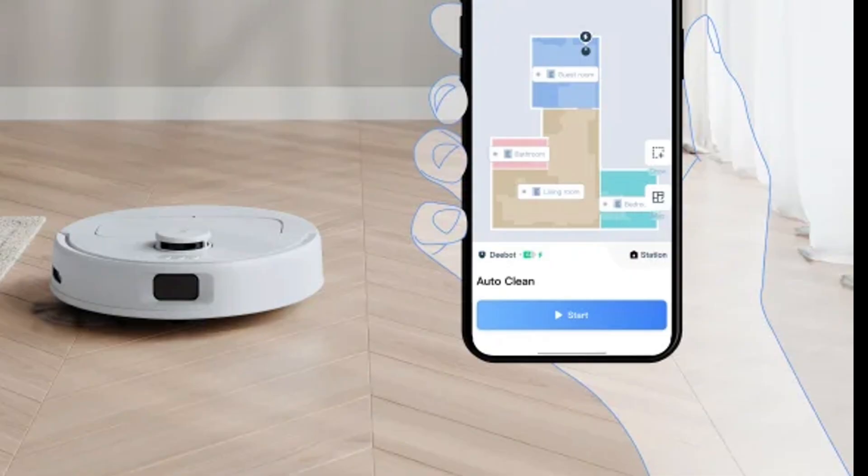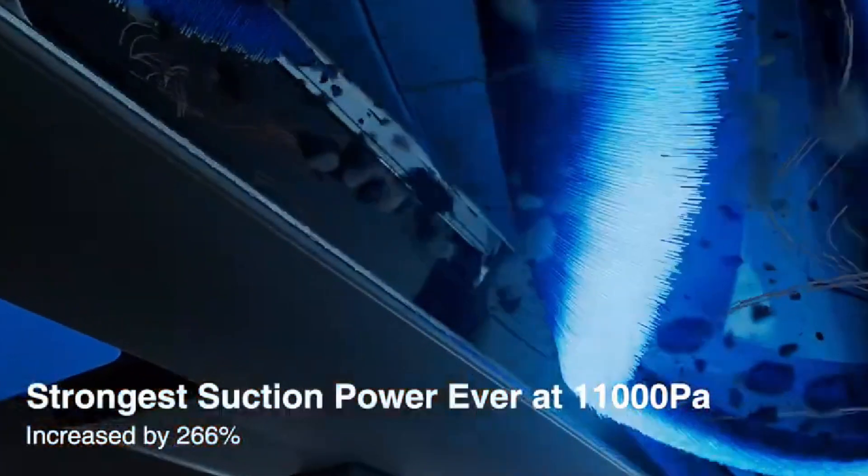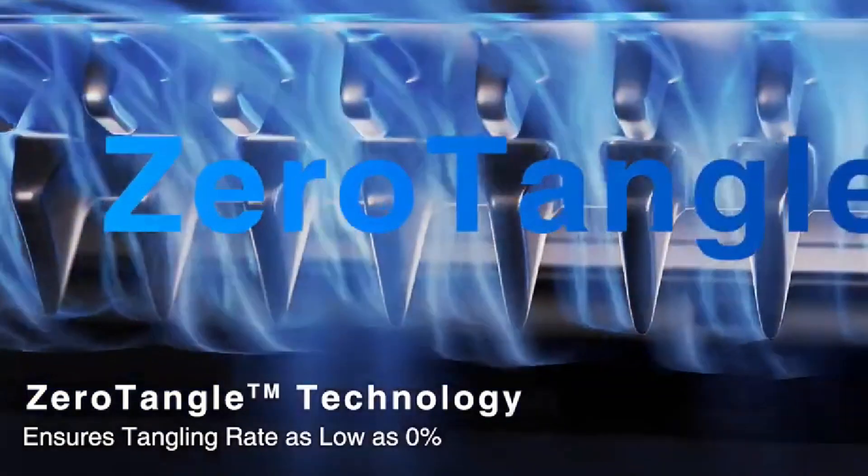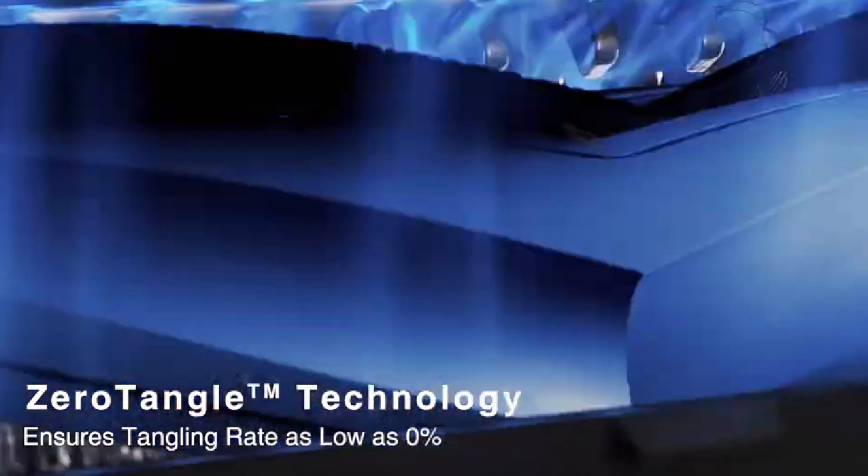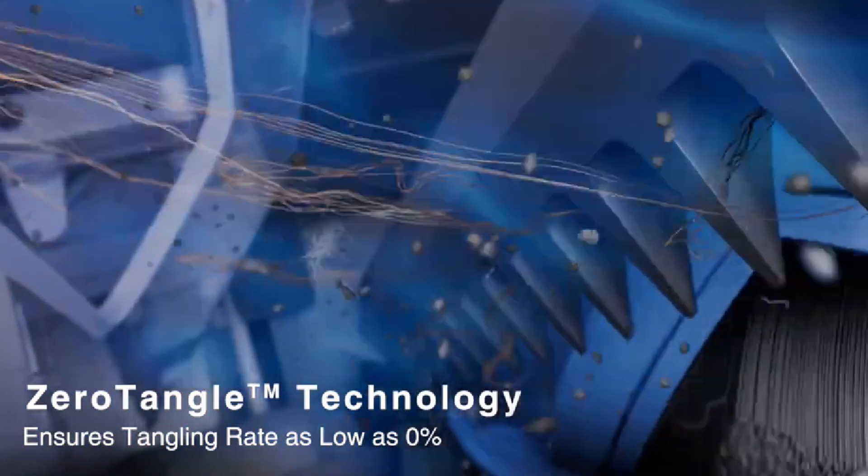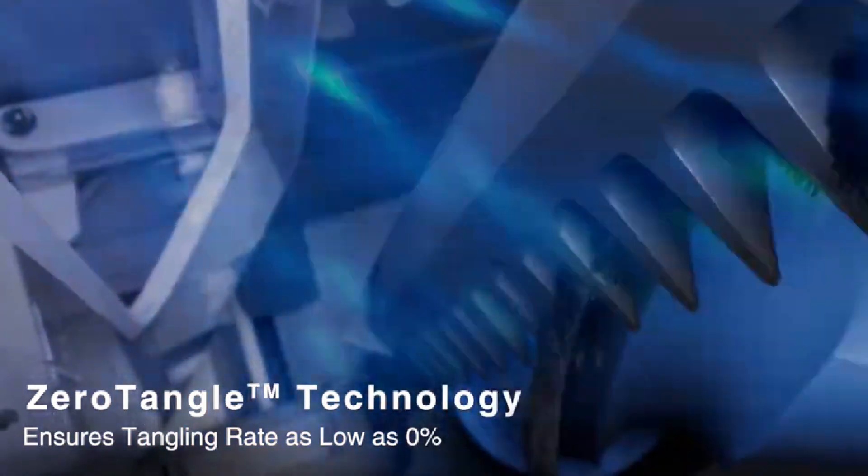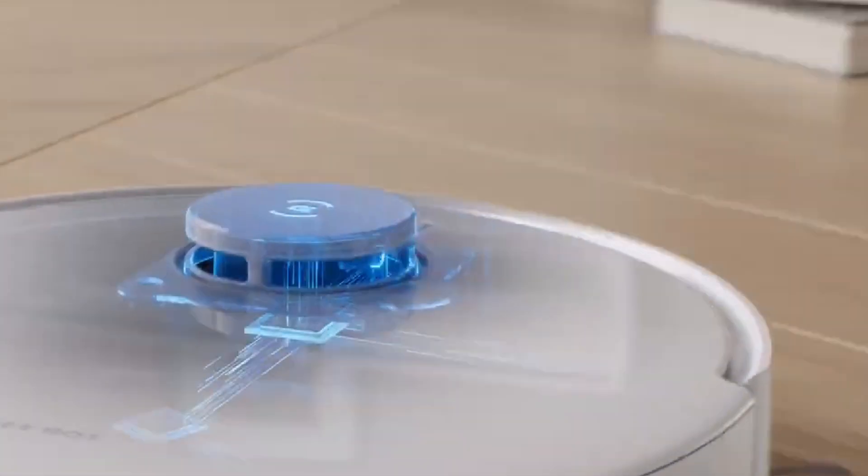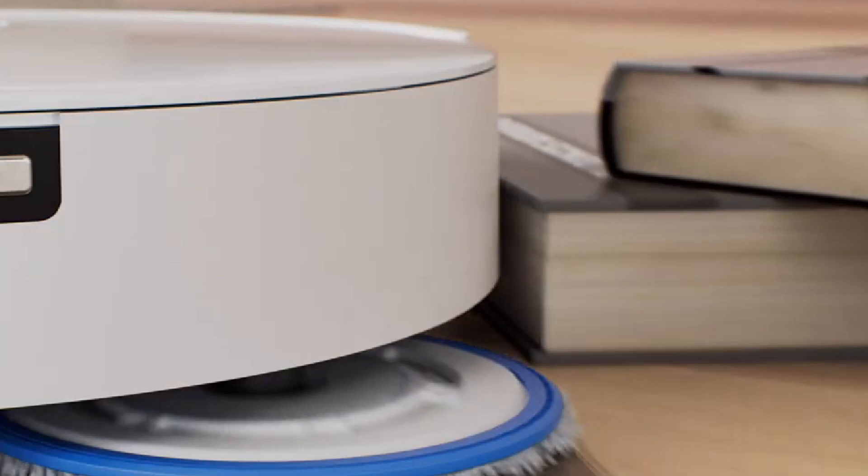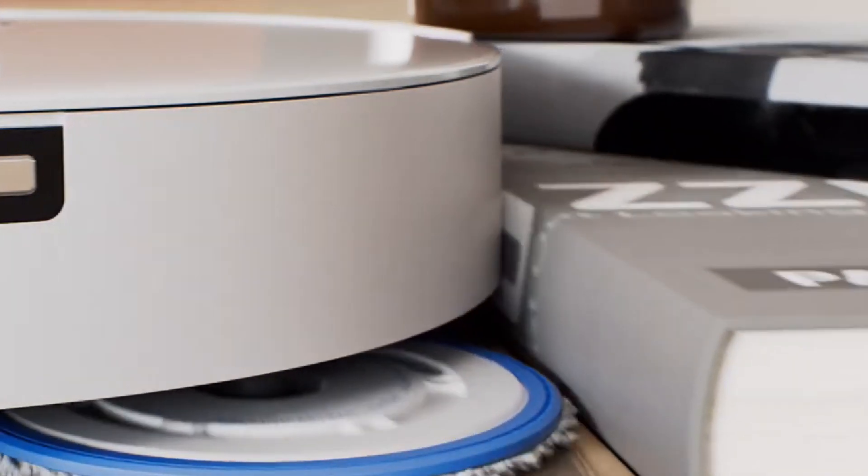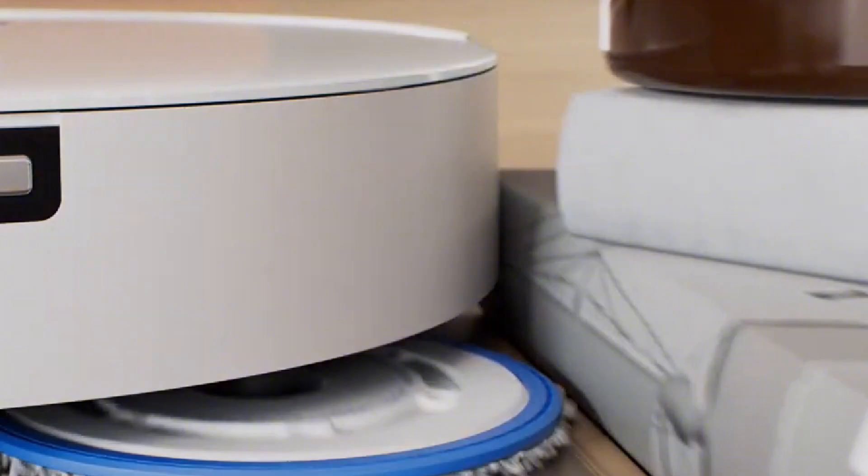In terms of performance, the T30 is equipped with a powerful suction system that adjusts to different floor types, from hardwood to carpet. This ensures that it picks up dirt, dust, and pet hair effectively. The vacuum also features a high-efficiency filter that captures not only larger debris, but also microscopic particles, allergens, and dust mites, making it an excellent choice for allergy sufferers and households with pets. With its robust filtration system, you can breathe easier knowing that your home is cleaner and healthier.